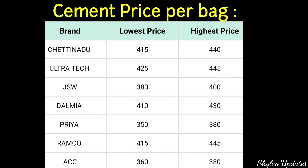Priya cement is from Rs.350 to Rs.380. Ramco cement is from Rs.415 to Rs.445. ACC cement is from Rs.360 to Rs.380. When compared to last few months, Rs.10 has been reduced.